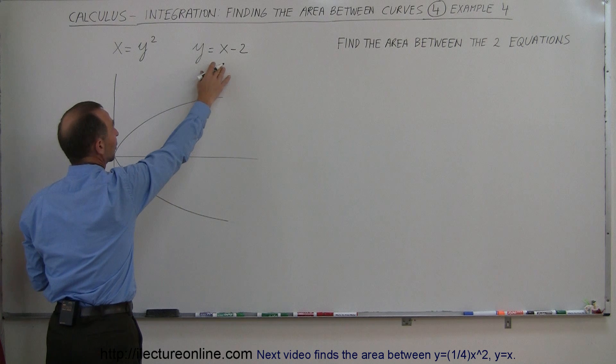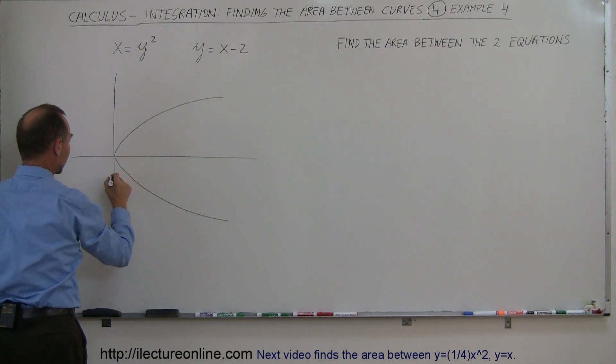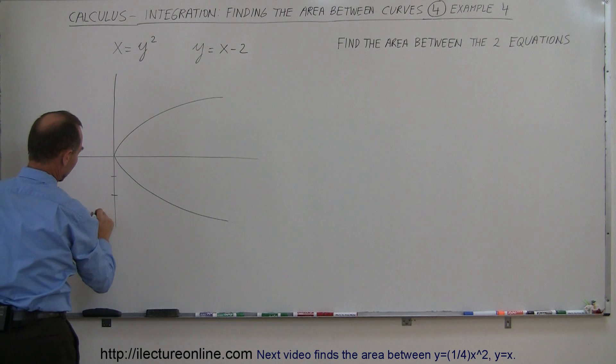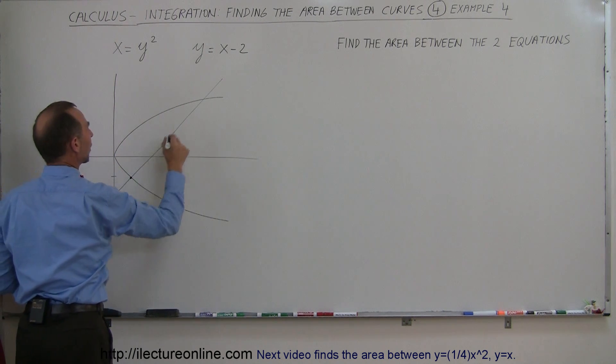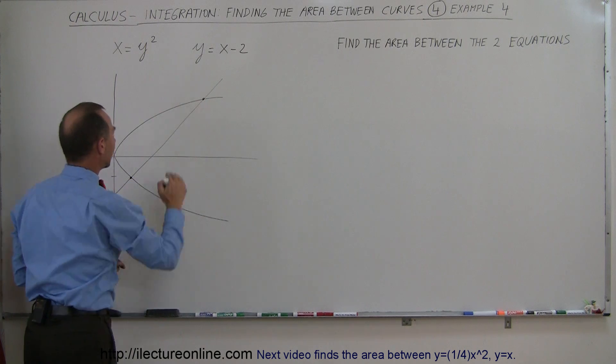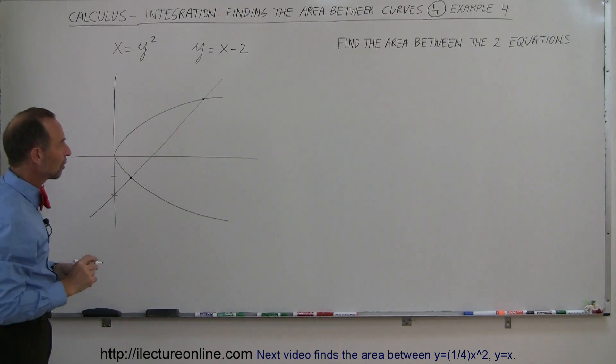And there's a straight line, y equals x minus 2, the y-intercept is at minus 2, the slope is 1, so it looks kind of like this. And notice that those two equations cross right there, and cross right there, and there's the area bounded by the two equations.